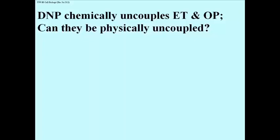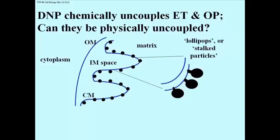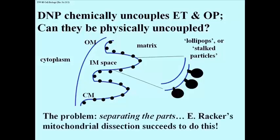Ephraim Racker was experimenting with ways to dissect mitochondria and analyze the functions of the parts. Electron micrographs suggested that the inner surface of the cristae membrane was coated with particles. The separation took Racker a long time to solve, but eventually his mitochondrial dissection was successful.